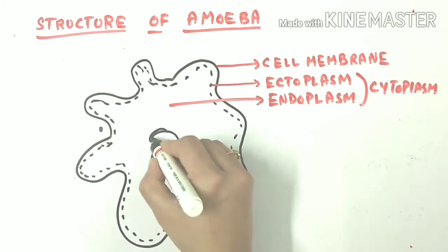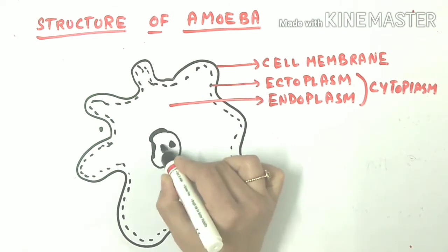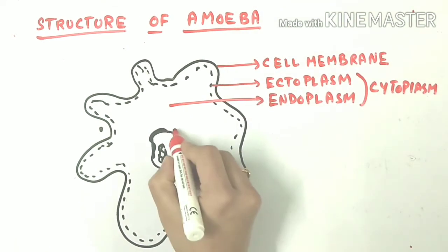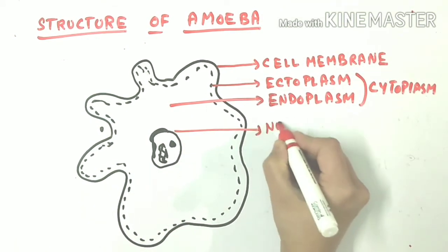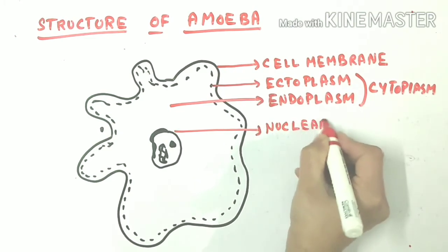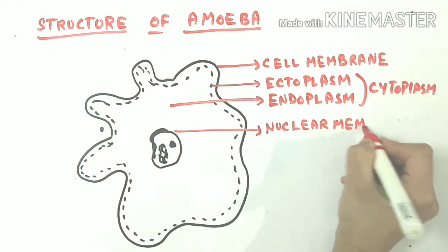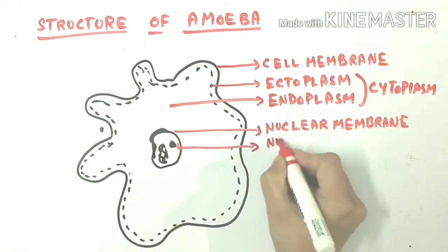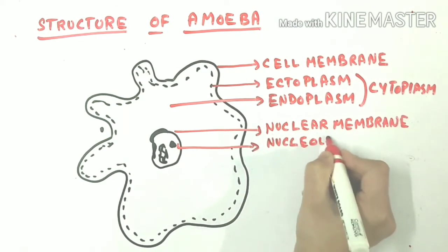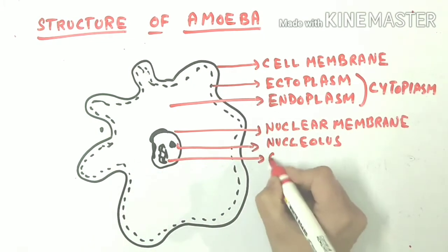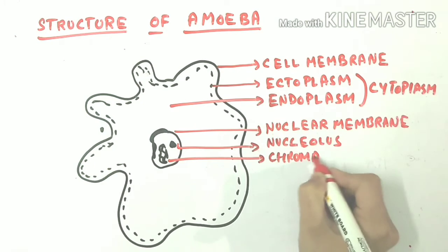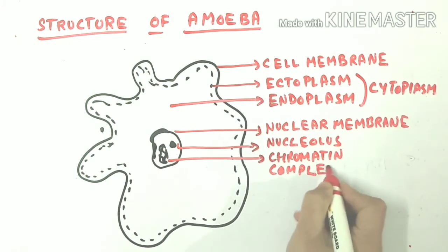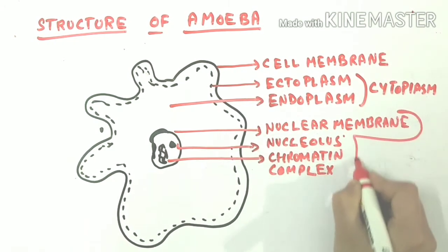In 1942, Clark showed that if the nucleus is removed from amoeba, there is a 70% reduction in locomotion, respiration, and digestion, and the amoeba dies within seven days. This is the nuclear membrane — it separates nuclear material from cytoplasm. This is the nucleolus, which synthesizes ribosomal RNA. This is chromatin material, which contains hereditary information for the next generation.